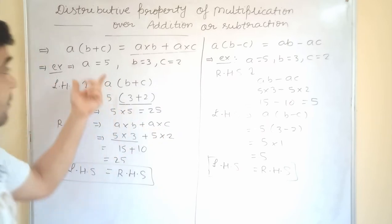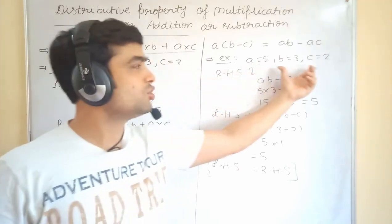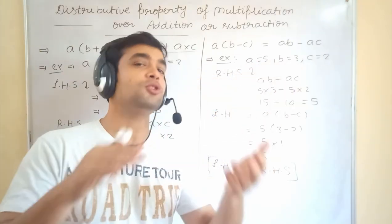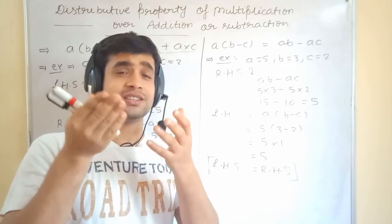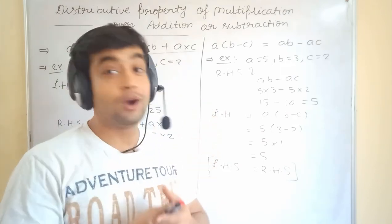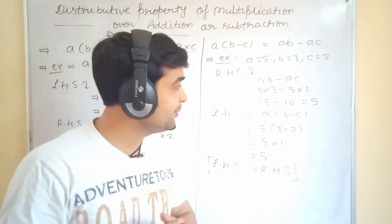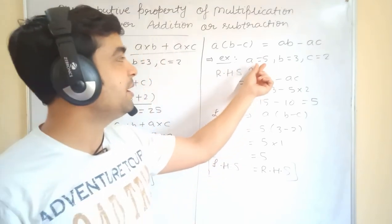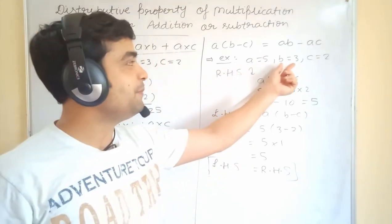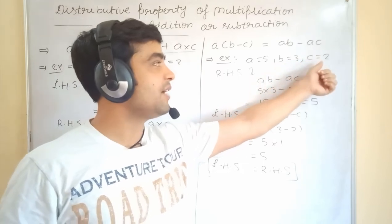Sorry, 2. So, the same numbers we have taken. We have taken small numbers. You can take big numbers also if you wish. You have because you all are at home only. You have lot of time. So, you can check by the big numbers. So, A, I have taken 5. B, I have taken 3. And, C, I have taken 2.